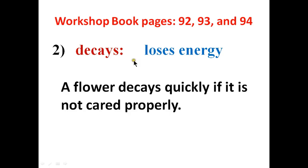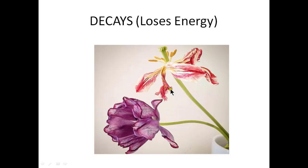Number two word is 'decays.' It means loses energy or loses vitality or freshness — something that withers away or dies quickly. The sentence is: a flower decays quickly if it is not cared for properly. Here you can see two flowers in the picture — both flowers are going to wither away, losing their freshness and no longer attractive, meaning they are decaying because they haven't been properly cared for.